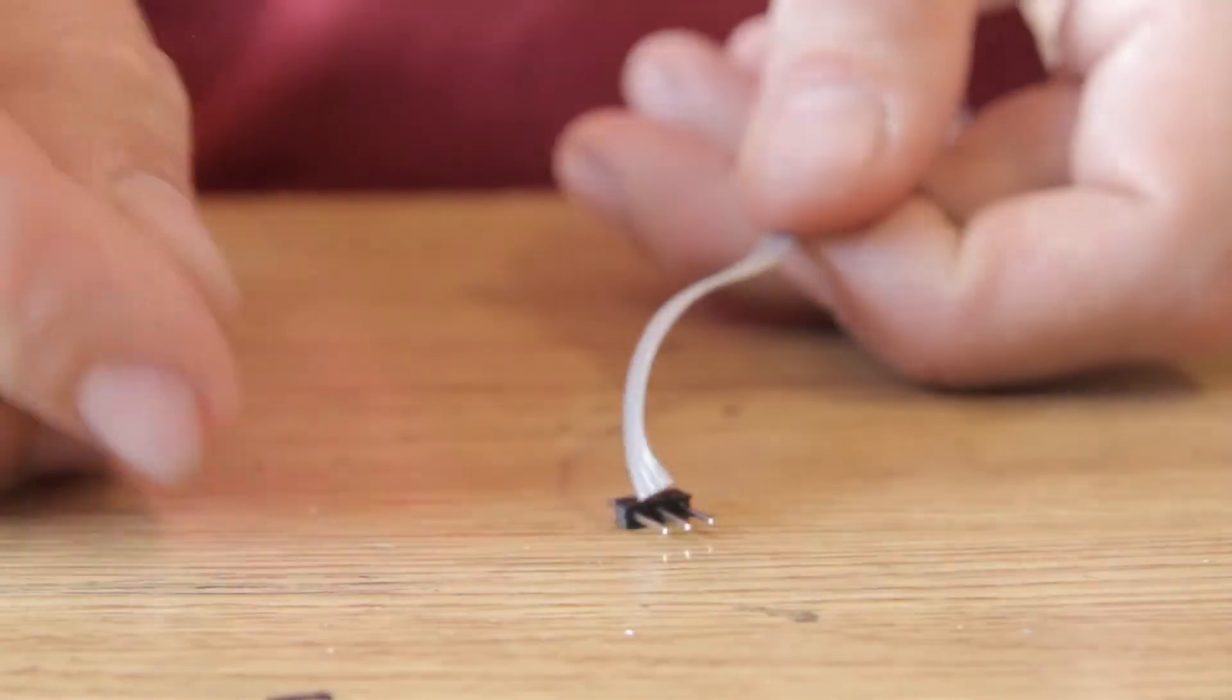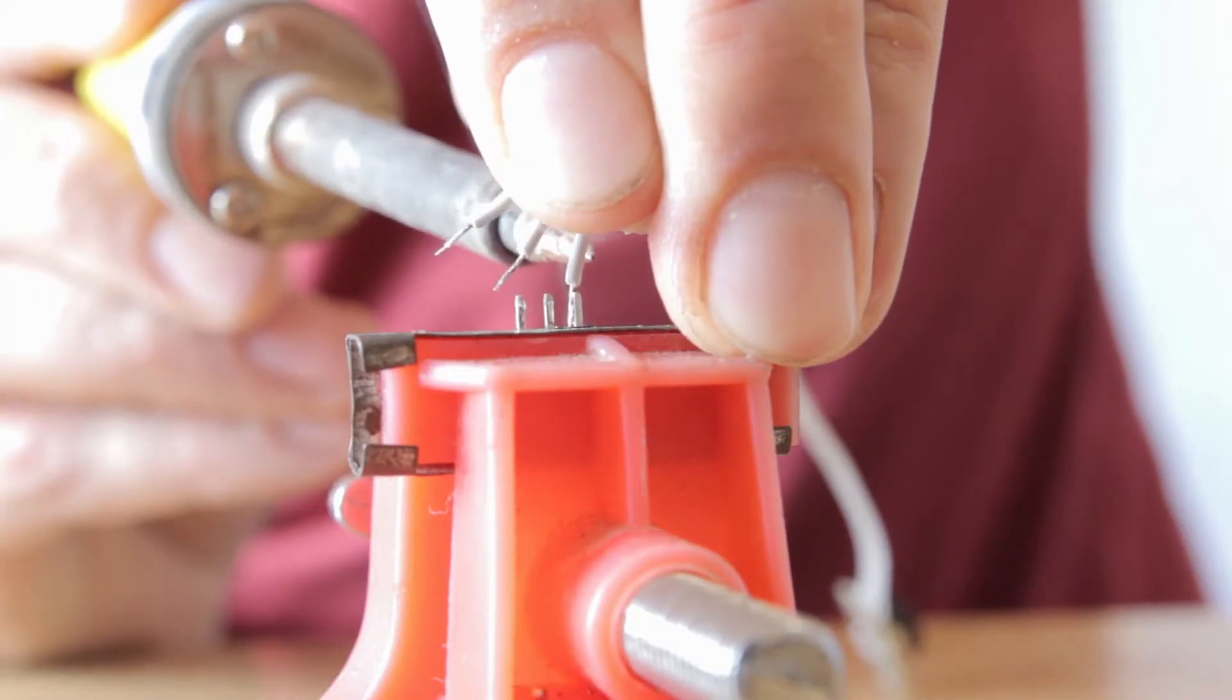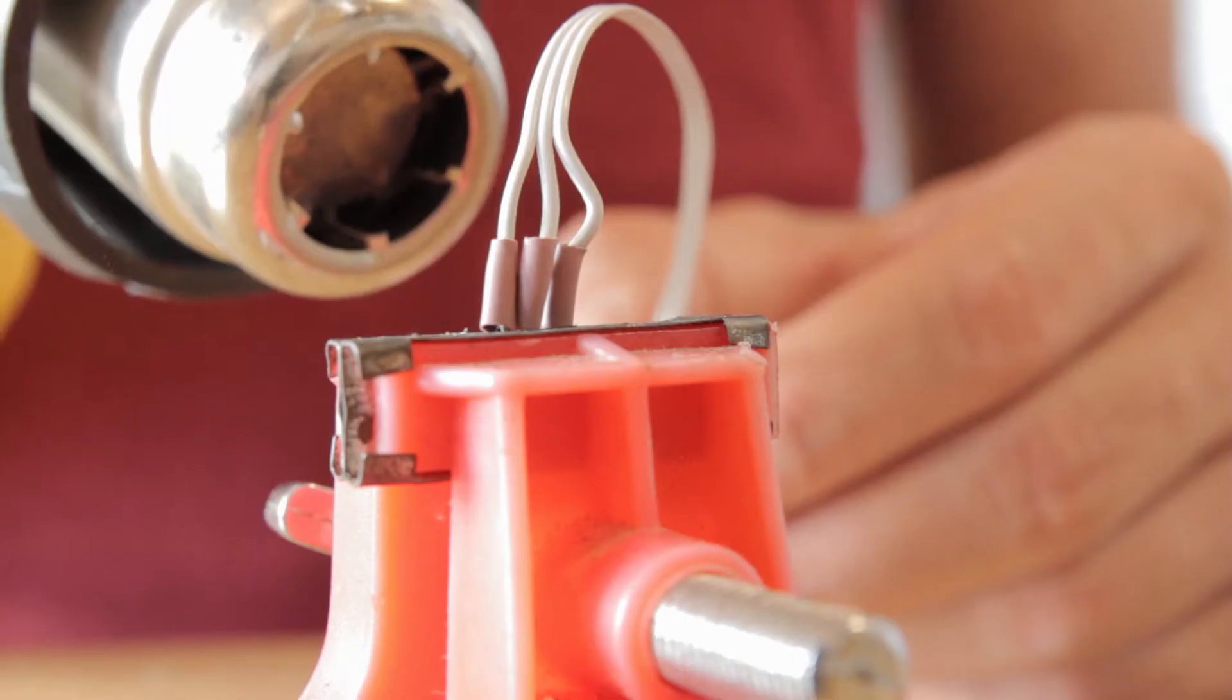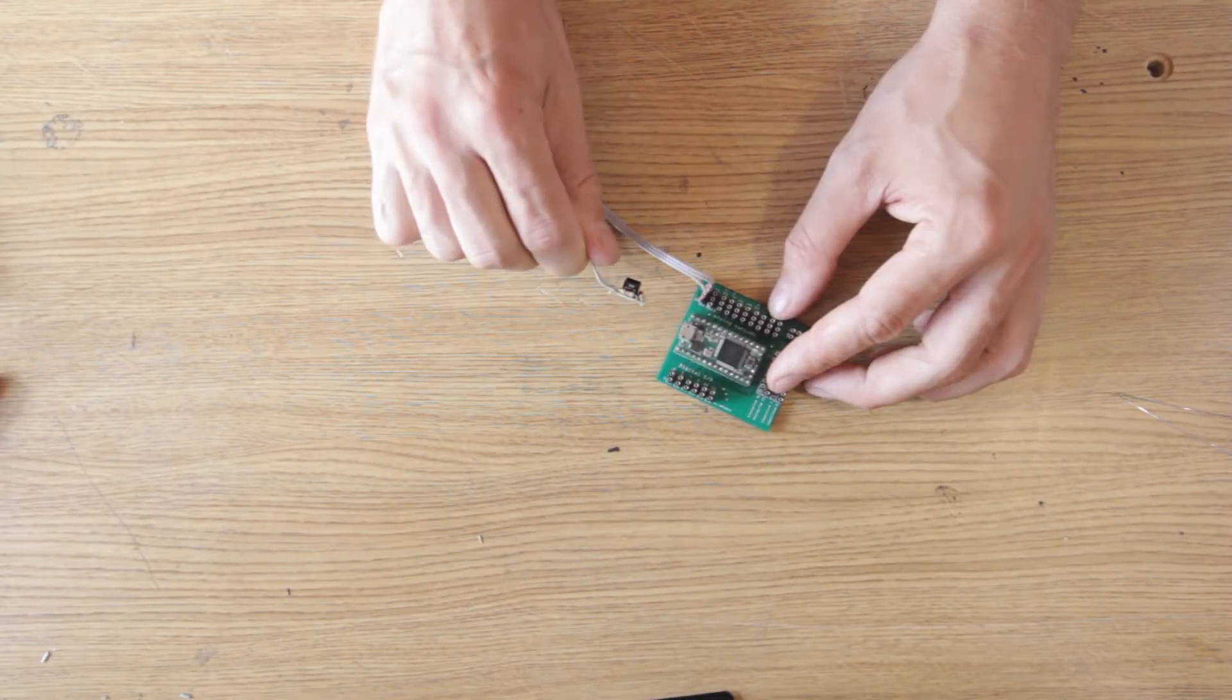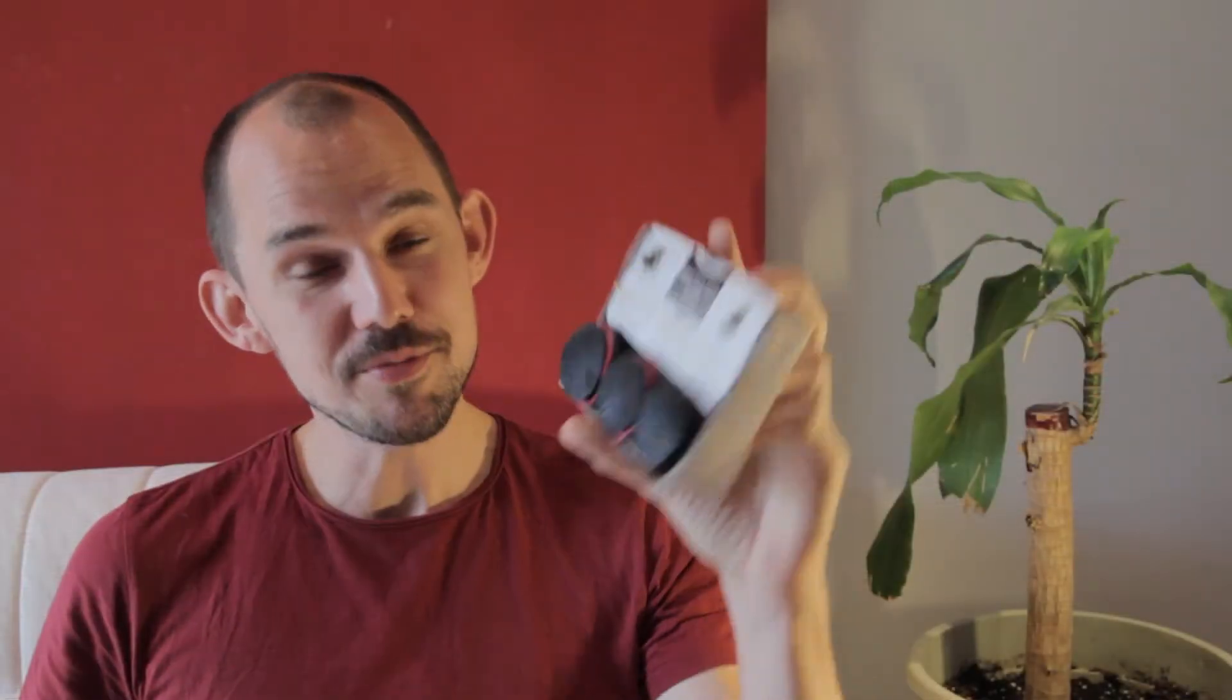Then get a three-pin male header and solder the cable onto that. Heat shrink tubing is optional but generally a good idea. And that's it. This module is ready for the next workshop where it'll be used to make one of these finger drums or other interesting DIY instruments.